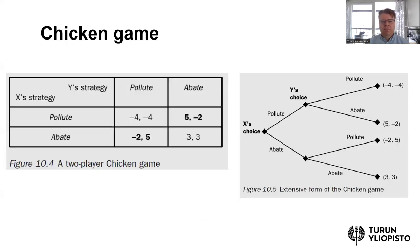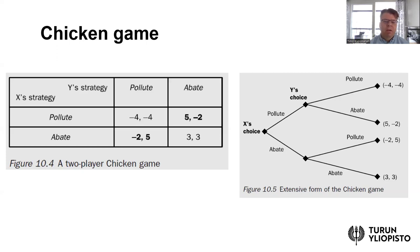There are, of course, other possibilities. Here's another simple example taken from the Perman et al. textbook, known as the chicken game. Again, we have two countries X and Y, and two strategies — to pollute or abate. This example illustrates how some minor changes to the payoff structure can change the outcome completely. In the chicken game, when the payoff of the situation where both are free riding and both continue to pollute is very highly negative, then unilateral abatement by country X or country Y might be the Nash equilibrium.